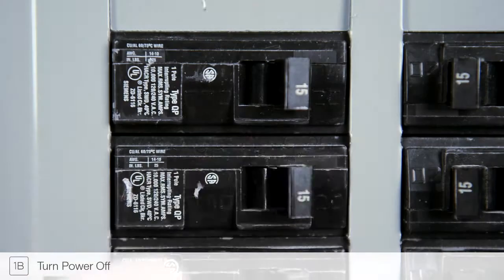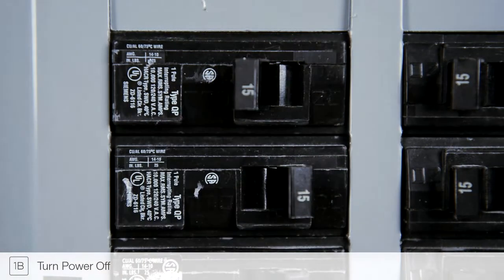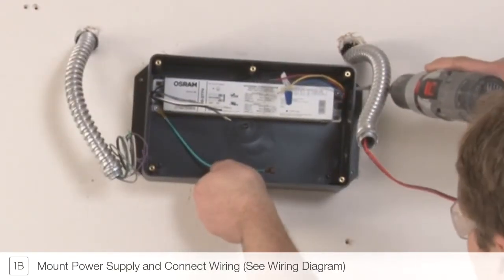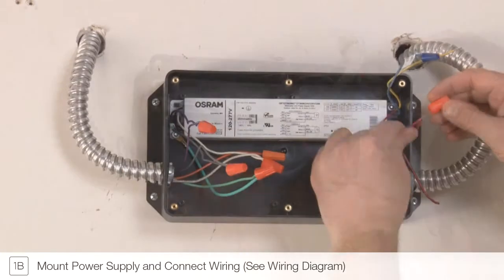Step 1B. Before doing any electrical wiring, always ensure the power is turned off at the breaker panel. Mount the remote power supply in an accessible area nearby.